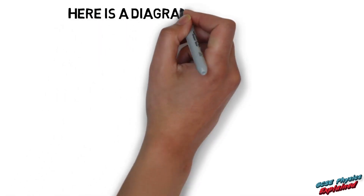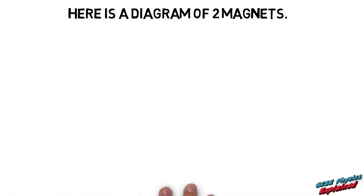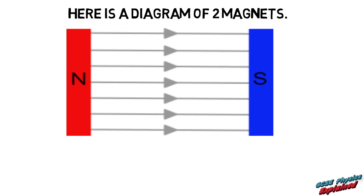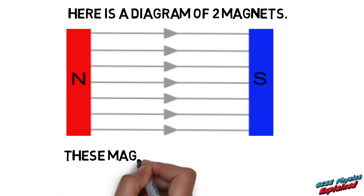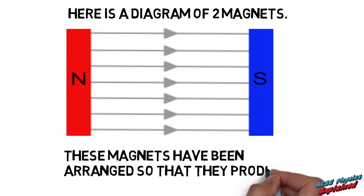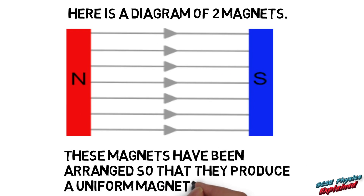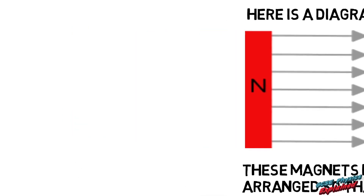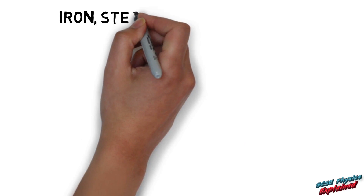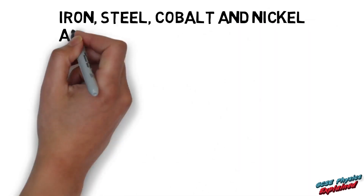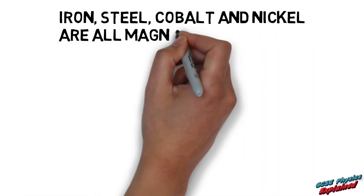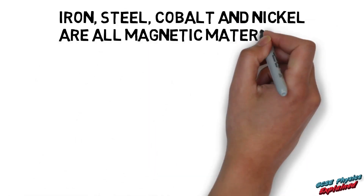Here is a diagram of two magnets. These magnets have been arranged so that they produce a uniform magnetic field. Iron, steel, cobalt and nickel are all magnetic materials.